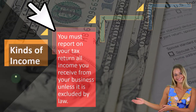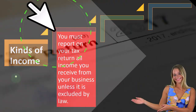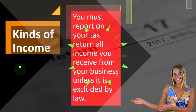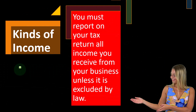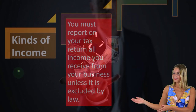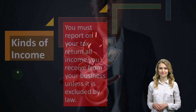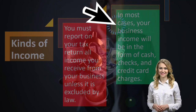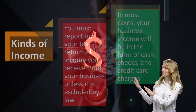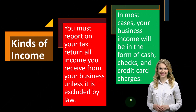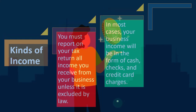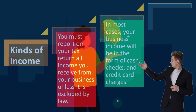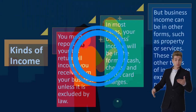Kinds of income: you must report on your tax return all income you receive from your business unless it is excluded by law — that's the general stance of the IRS. In most cases, your business income will be in the form of cash, checks, credit card charges, and so on. That's the point of cash: to have a measure of payment.